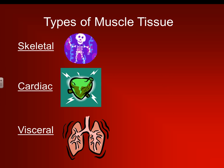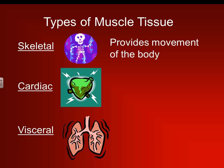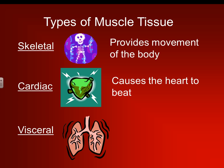So types of muscle tissue. First is skeletal — pertaining to our skeleton, it provides movement of the body. Next is cardiac. Cardi is the medical term referring to the heart, so cardiac muscle causes the heart to beat. Your heart is a muscle; your cardiac muscle causes that heart to beat.